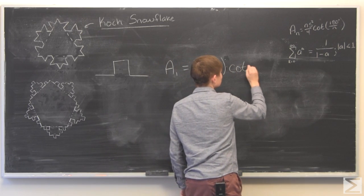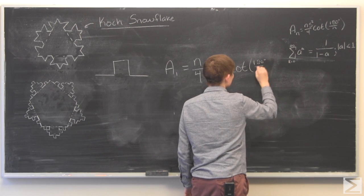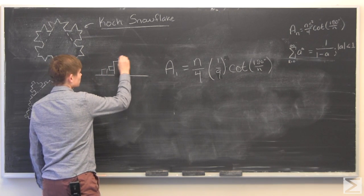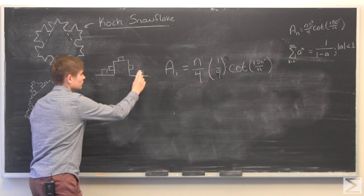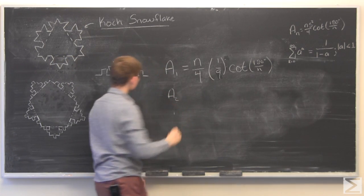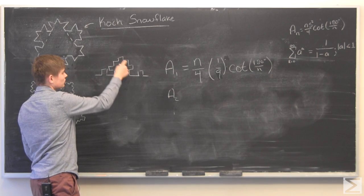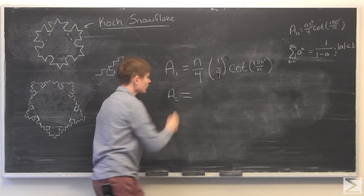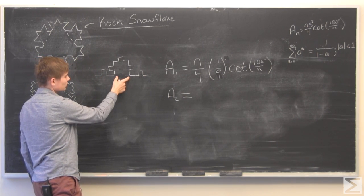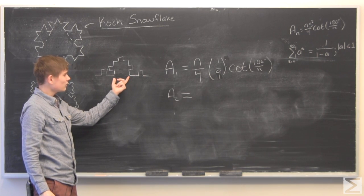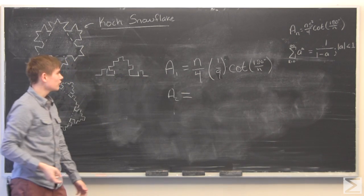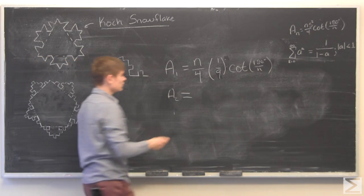Then what happens is we keep iterating this to get the second iteration. We'll say A2 is the area of the additional regions added. We have to count how many of these little squares there will be. If we added any n-sided regular polygon, we will have n minus 1 available sides — since we don't count the base side — plus 2 more. So we'll have n minus 1 plus 2, or n plus 1, many additions.